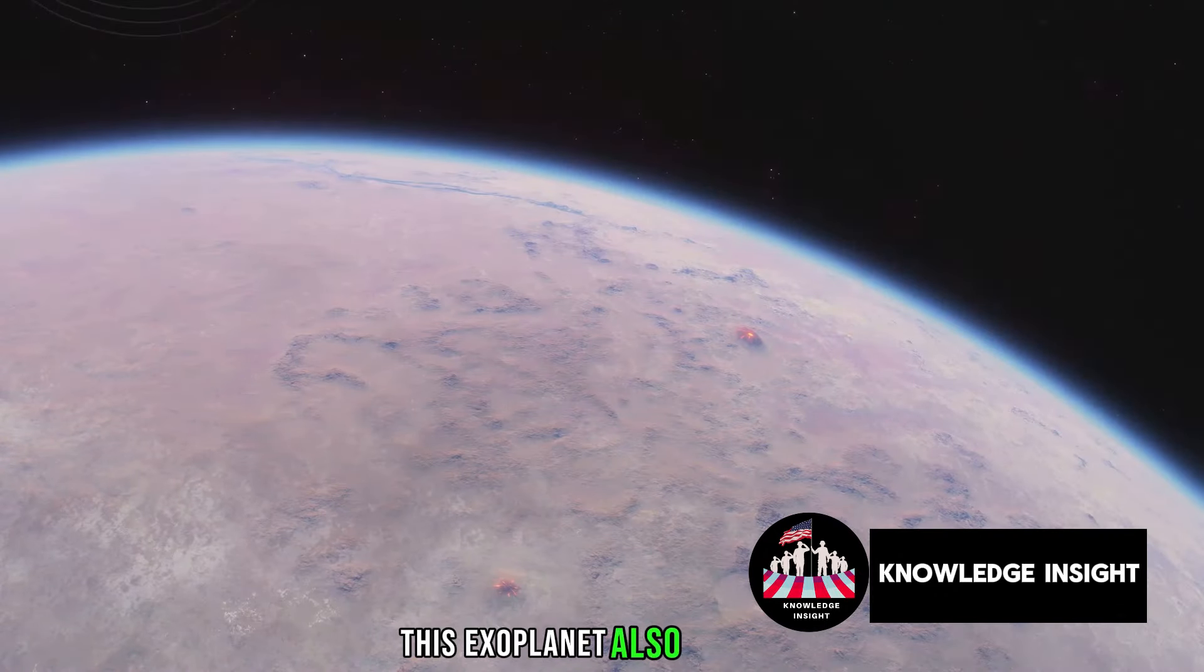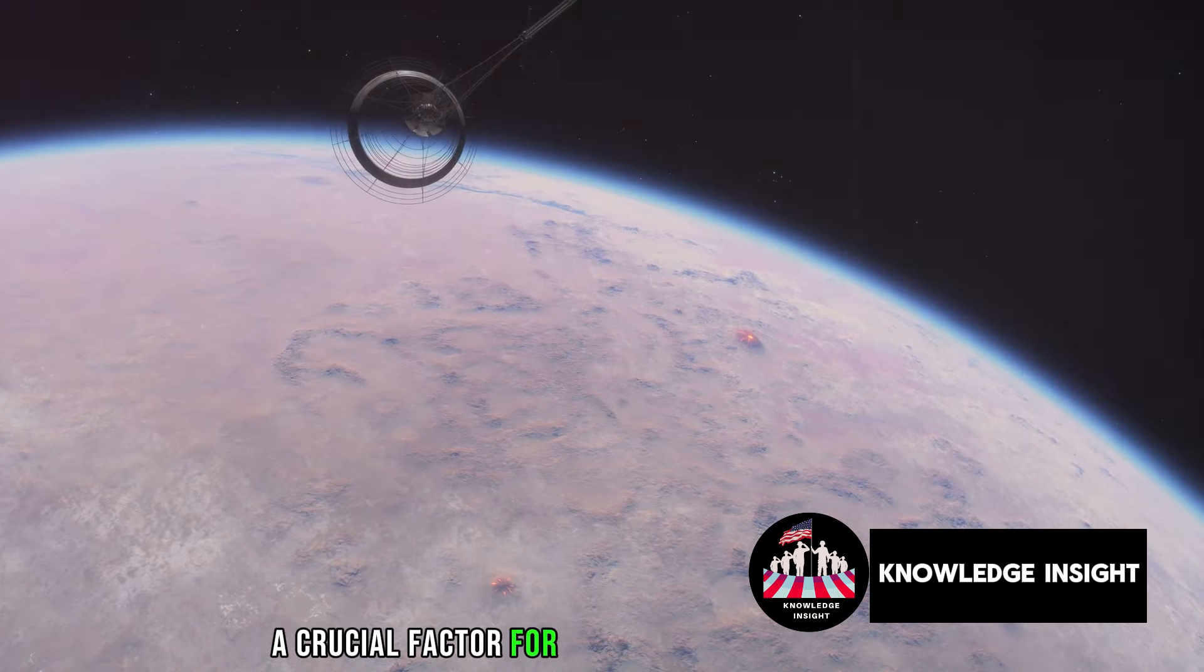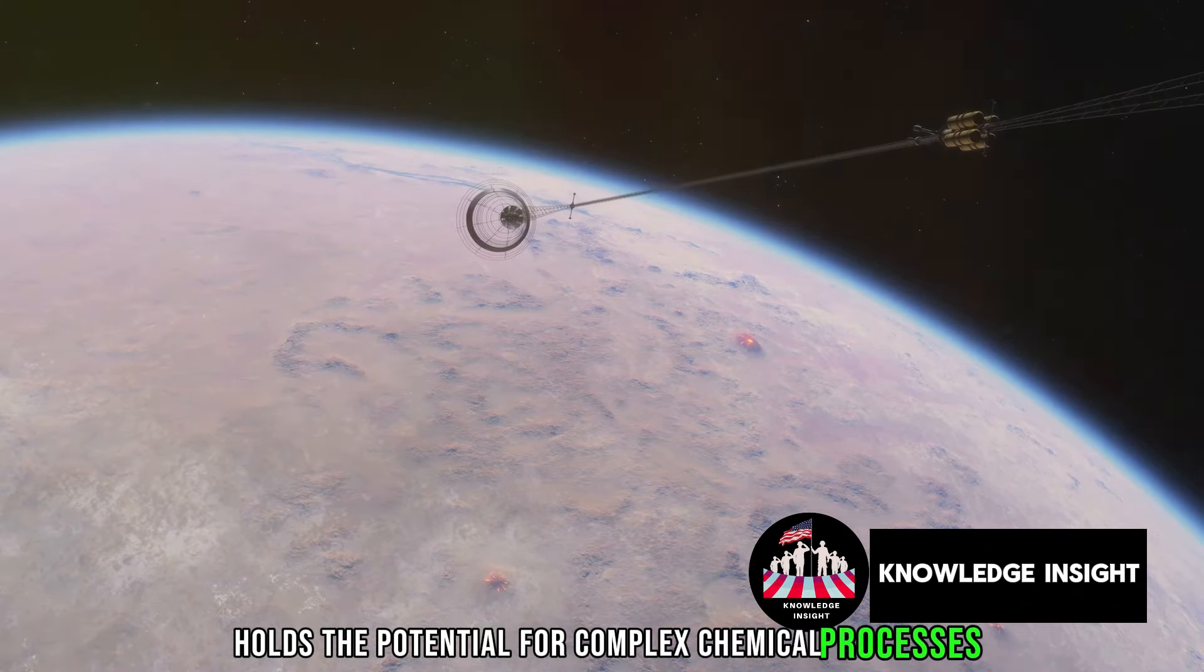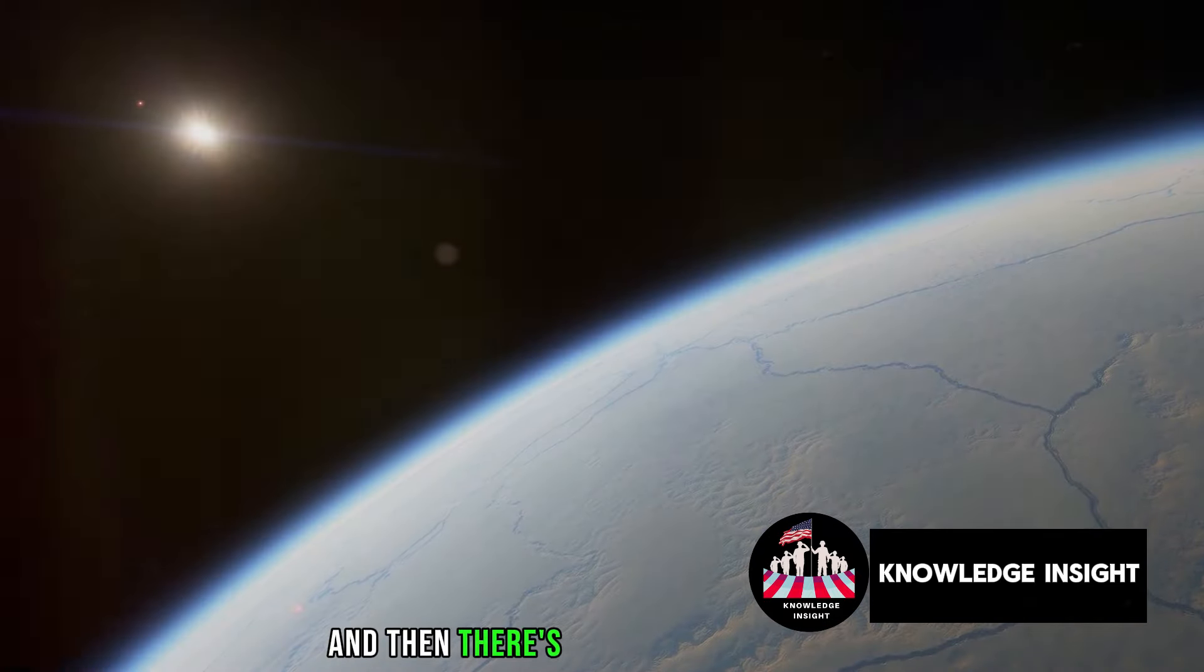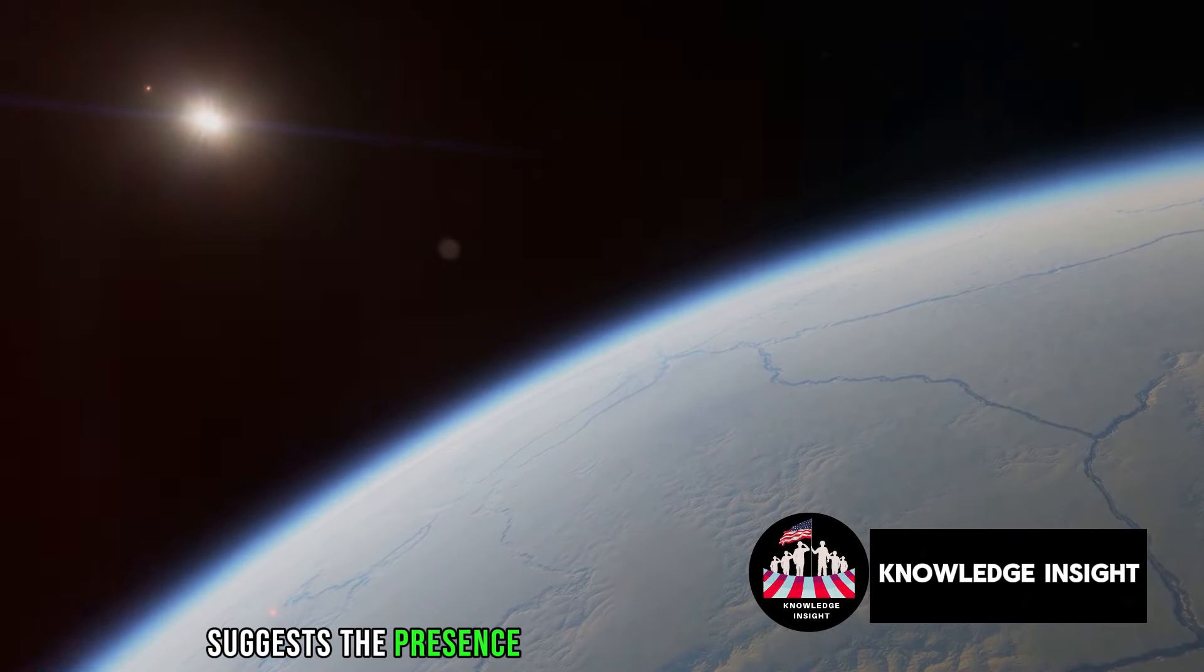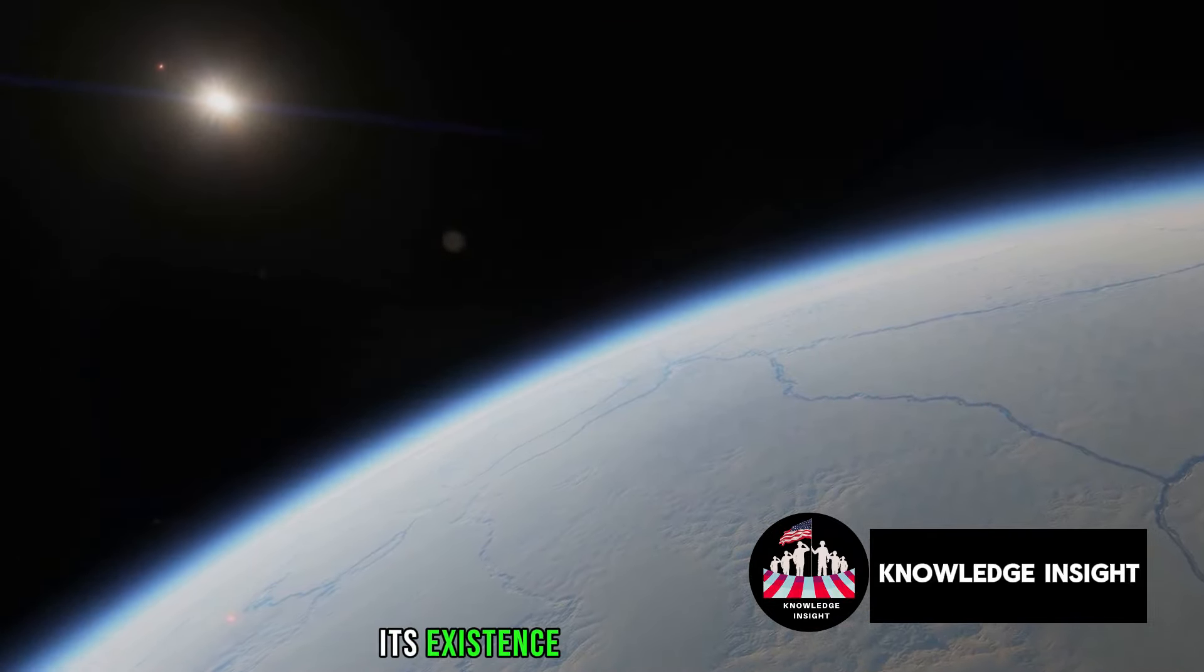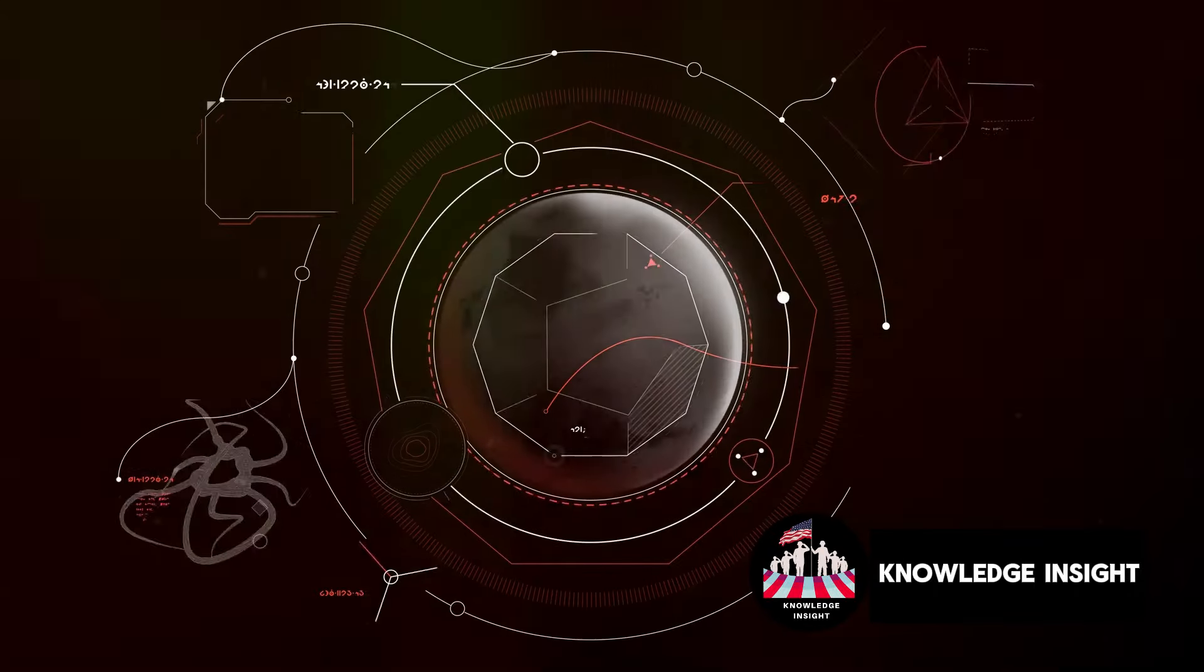This exoplanet also boasts a stable orbit around its host star, a crucial factor for any life-sustaining planet. Its atmosphere, while different from ours, holds the potential for complex chemical processes, the kind that could support life. And then, there's the question of water. Preliminary research suggests the presence of liquid water on this exoplanet. Water is, as we know, the elixir of life. Its existence on another planet raises the thrilling possibility of life beyond Earth.